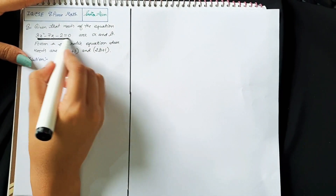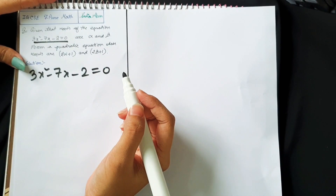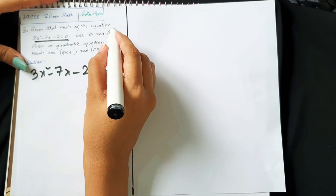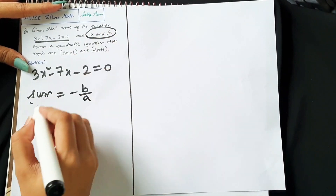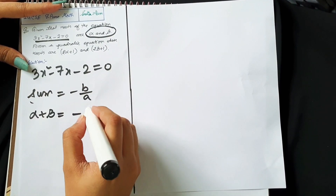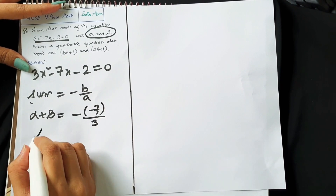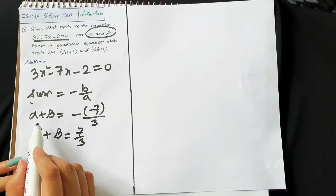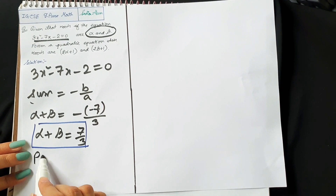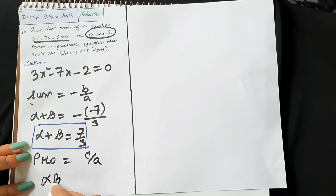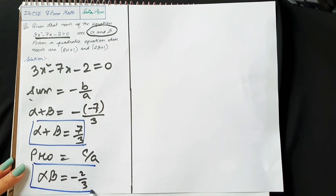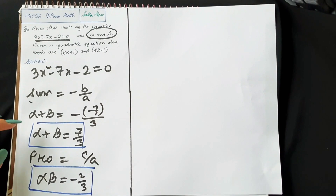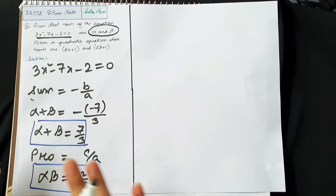Let's see another example. We have the equation 3x² minus 7x minus 2, and the roots of this equation are alpha and beta. Finding the sum: alpha plus beta equals minus b by a. Here b is minus 7 and a is 3, so alpha plus beta equals 7 by 3. Next, the product: alpha times beta equals c by a. Here c is minus 2 and a is 3, so alpha times beta equals minus 2 by 3. Always find the sum and product of the given equation so we can substitute values later.